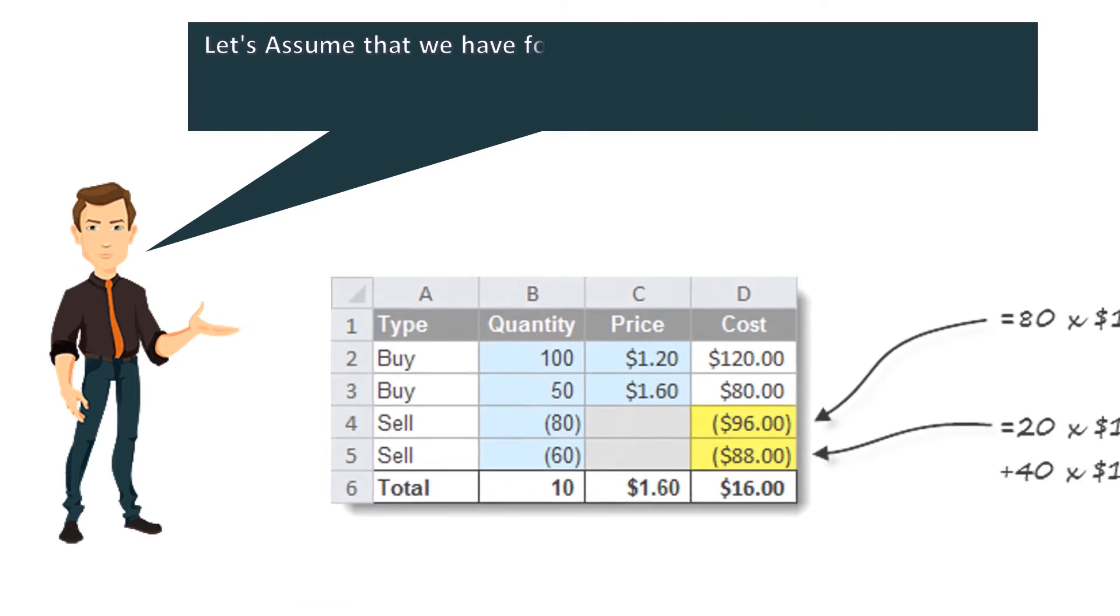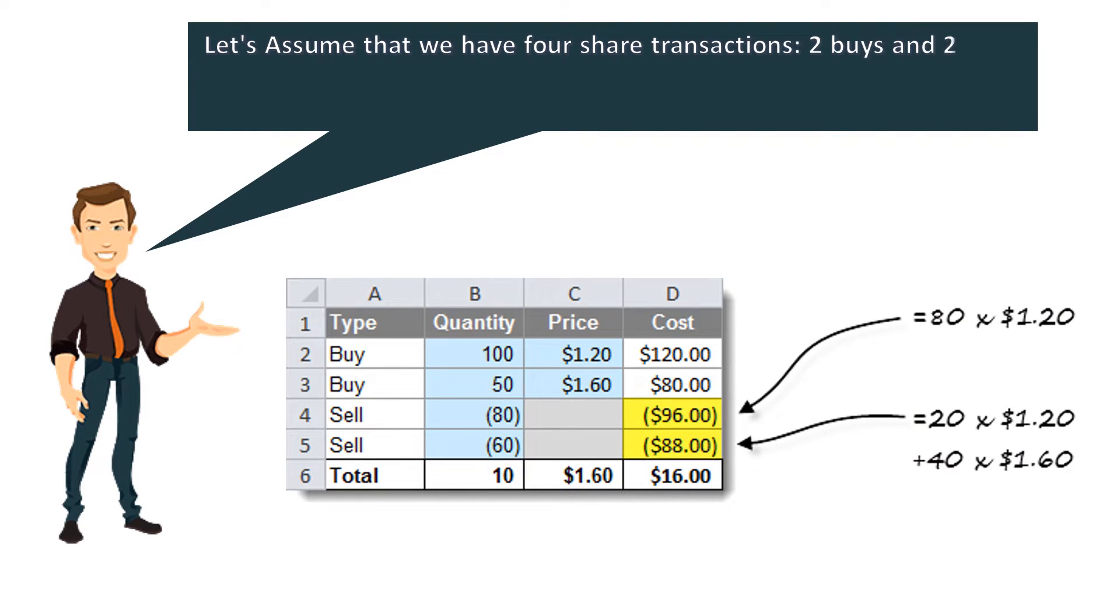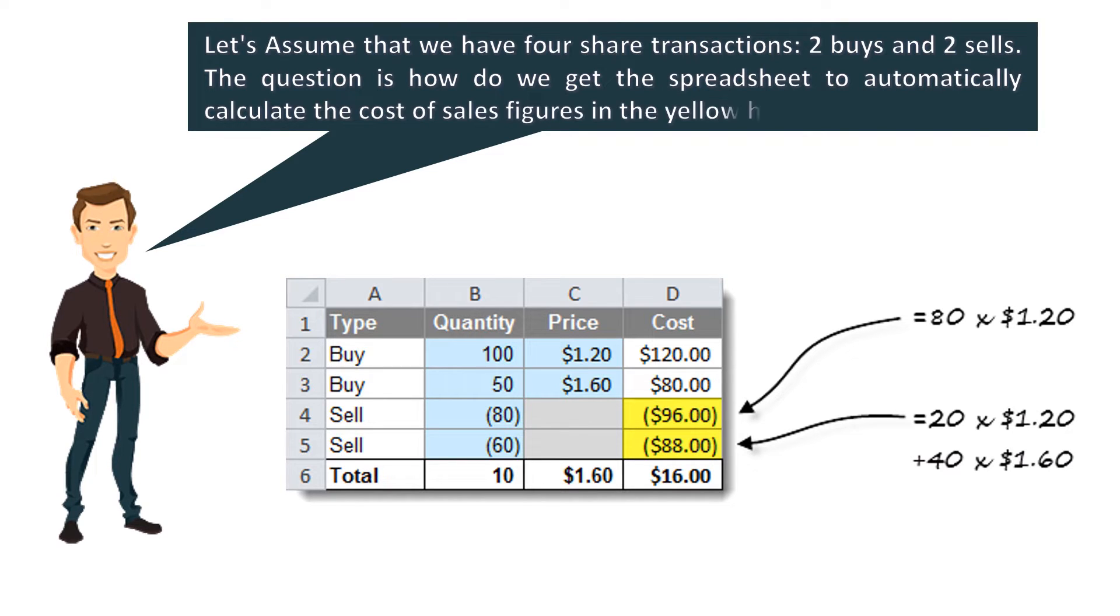Let's look at a simple example. Let's assume that we have 4 share transactions, 2 buys and 2 sells. The question is how do we get the spreadsheet to automatically calculate the cost of sales figures in the yellow highlighted cells?